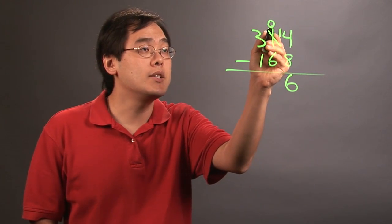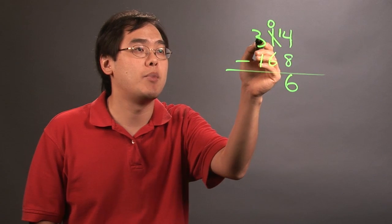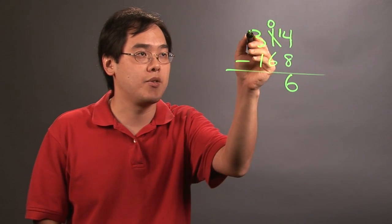Now, it's pretty clear that 0 cannot subtract 6. So 0 is going to have to borrow from the next digit over, which is going to be 3.